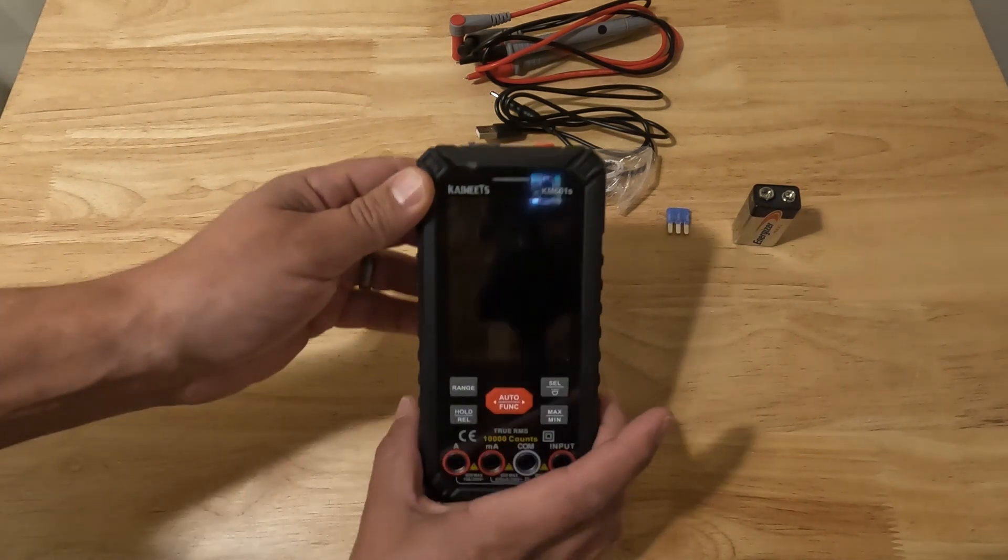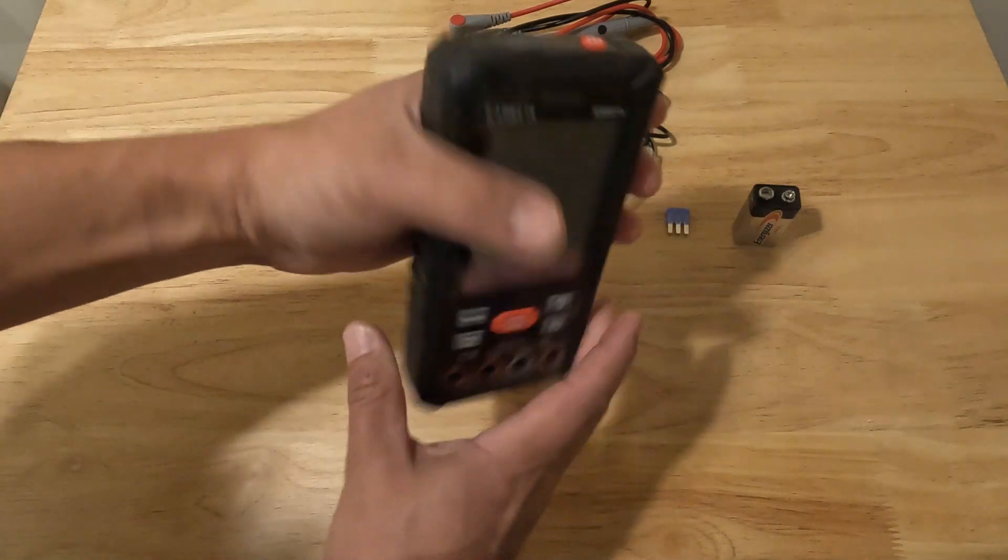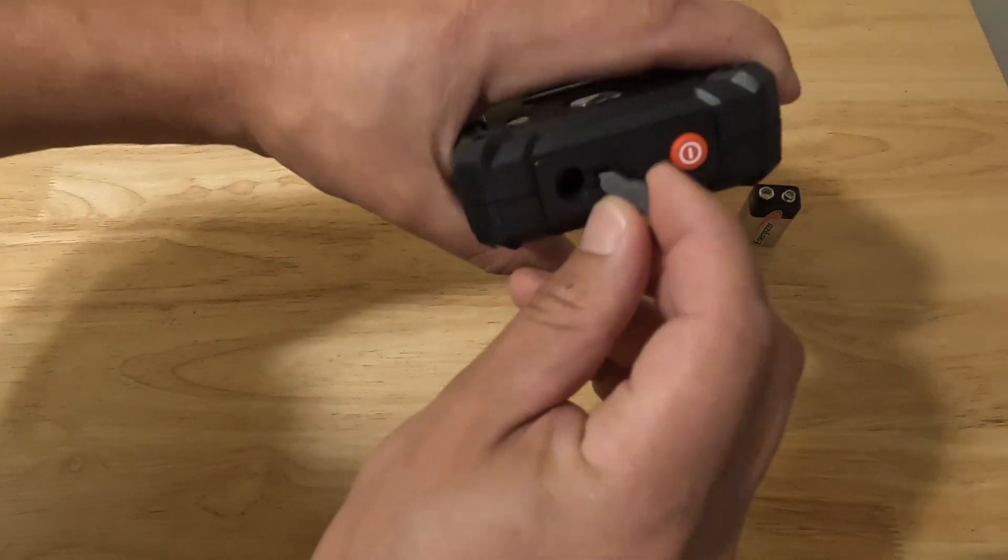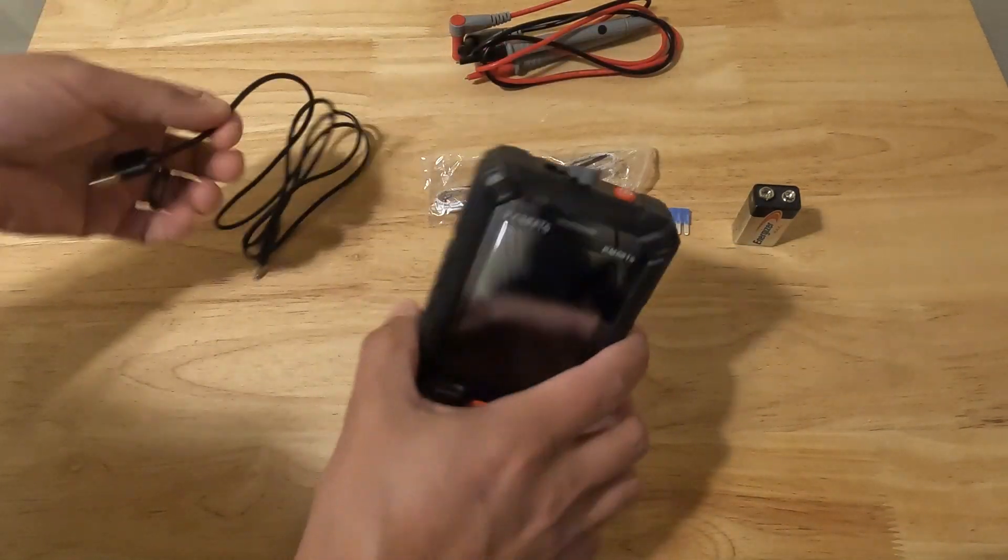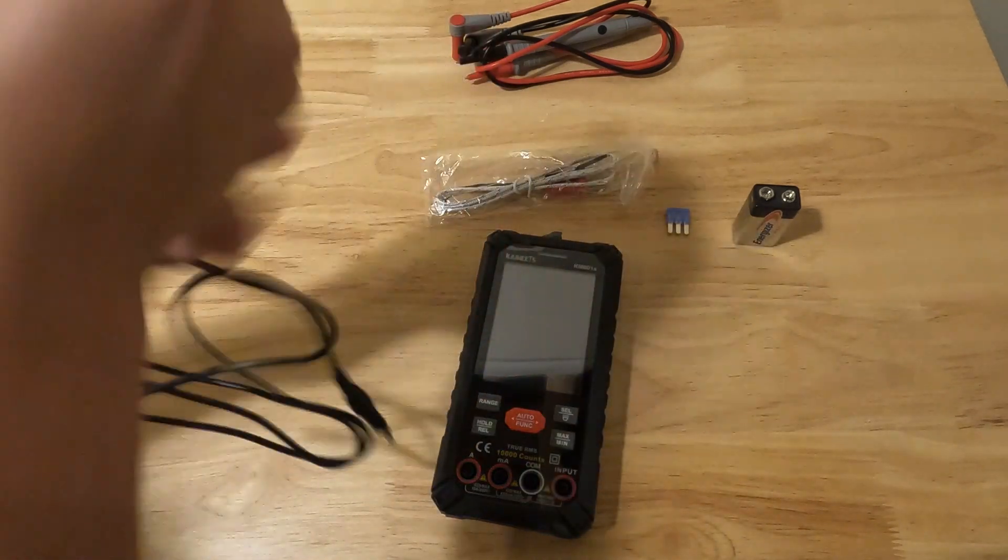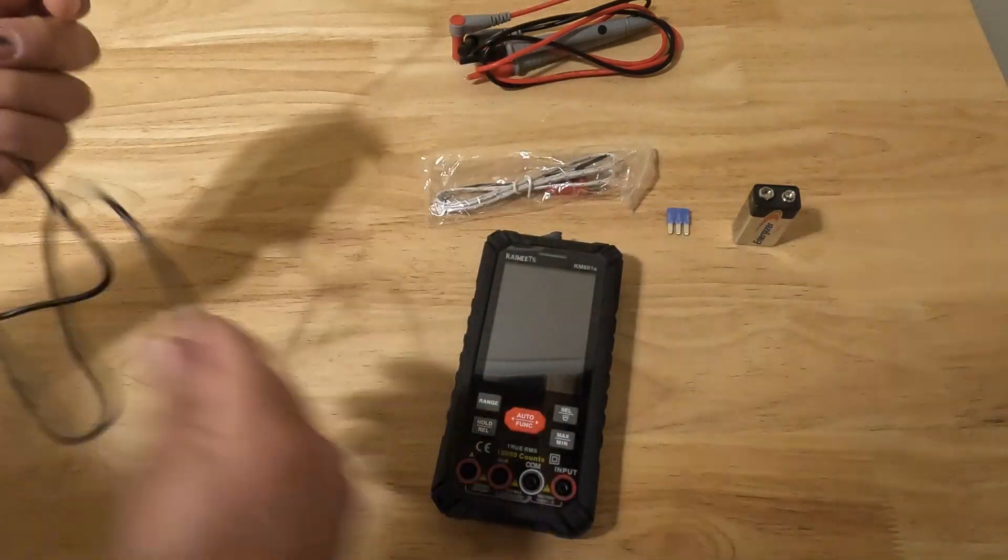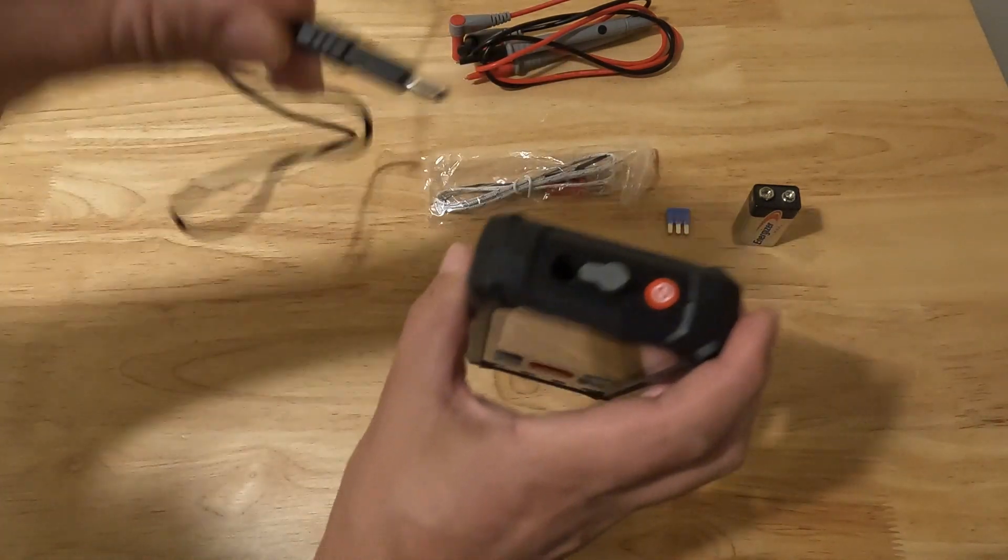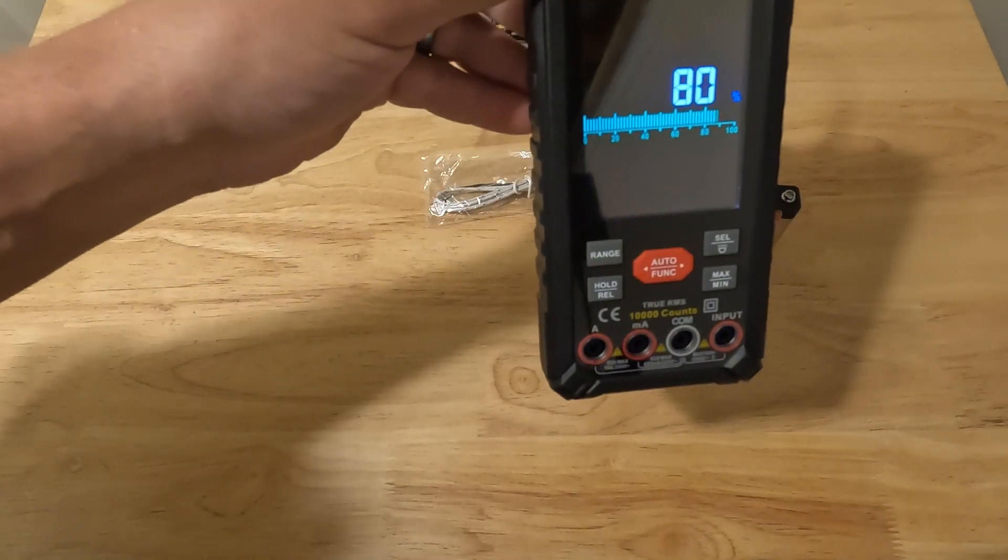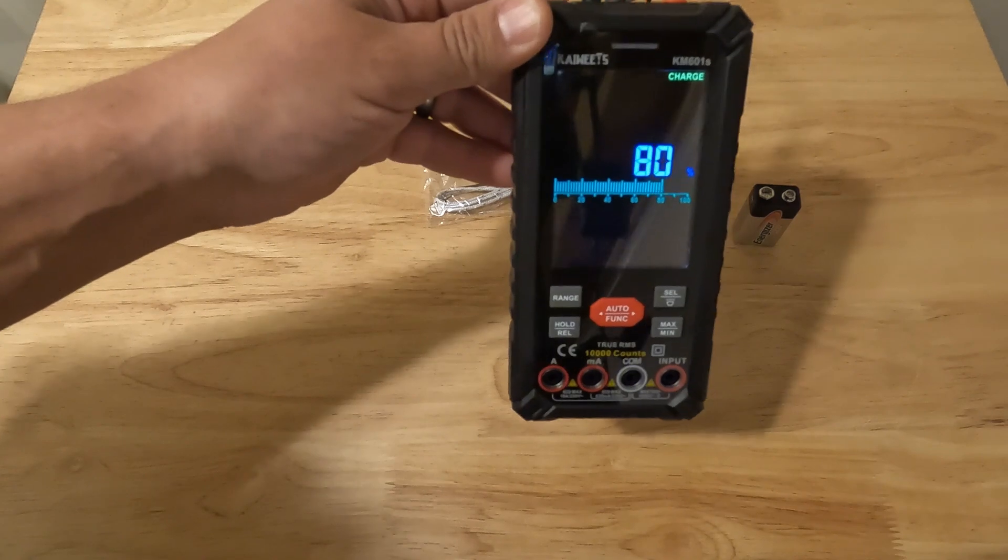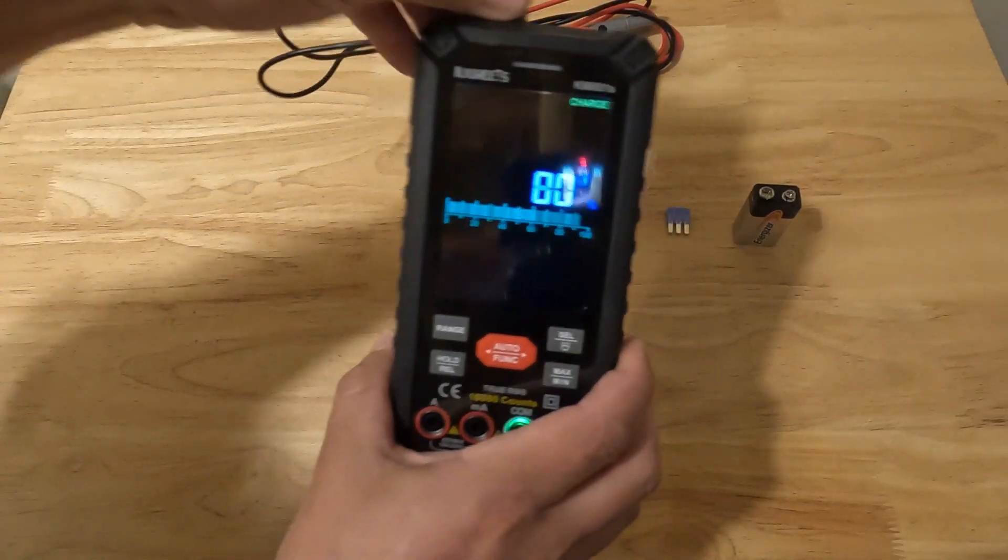Let's get right into how you use this thing. I'll show you how to charge it first. To charge it you're just going to want to undo this gray piece of rubber and then plug this end into your outlet or whatever you have to charge, and then just put it in and you'll see it power right up. It gives you the battery percentage, so you can see we're at 80 percent.